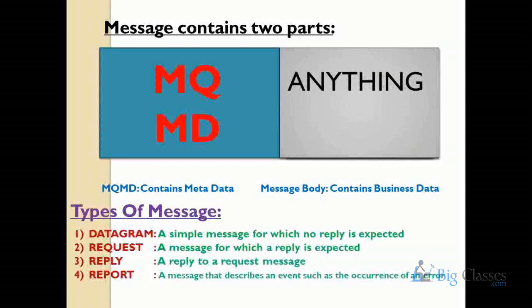If the message type is datagram, the remote service processes the data on IBM MQ server and does not send any reply to the source. If the source sends a request message, the remote service must send a reply message. Report messages are only produced by IBM MQ server — IBM MQ server can give acknowledgement on message delivery and on message arrival to the source service. Whenever messages reach the IBM MQ queue, the queue manager can give an acknowledgement to the source program, and when IBM MQ server delivers messages to the remote service, it can again give acknowledgement. The queue manager produces these acknowledgements as report messages and sends them to the source program.